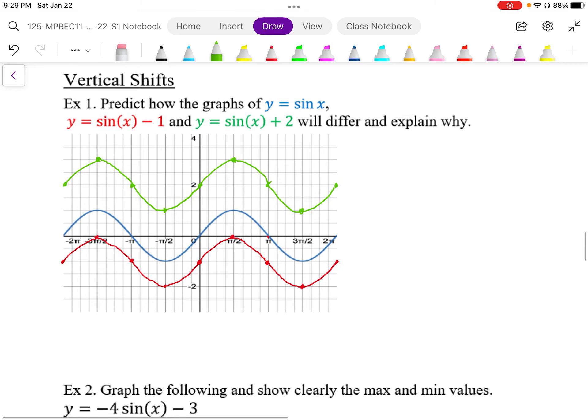And we should expect this because the function calculated, whatever the y value is, we're just going to add 2 to the green, minus 1 to the red, and we'll get this vertical shift up and down.